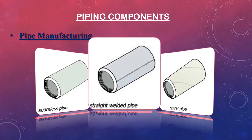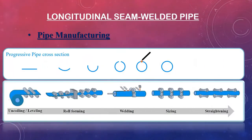For the seam welded pipe production process, it begins with steel sheets in the form of coils. The first step is to uncoil and level the sheet, then rolling starts to progressively form the circular cross section. The rolled sheet is then welded, sized to correct dimensions, and straightened at the final stage.